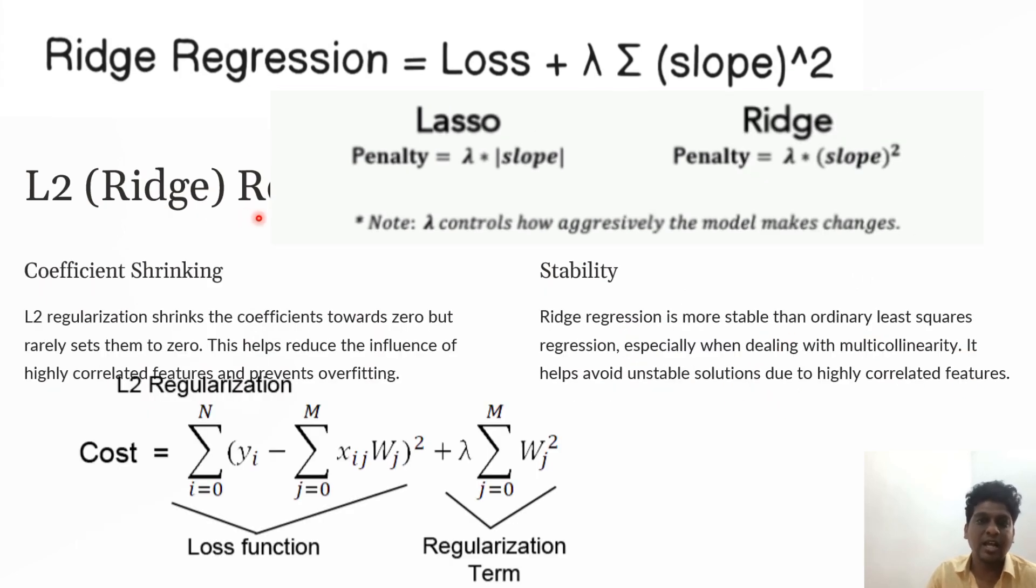Ridge regularization shrinks coefficients towards zero but rarely to zero. It handles highly correlated features and prevents overfitting with greater stability than ordinary least squares regression, especially when dealing with multicollinearity.